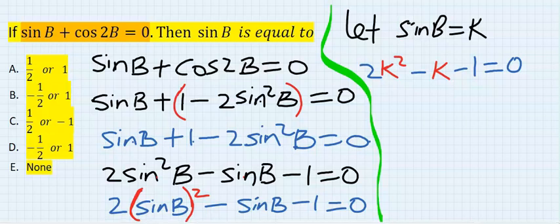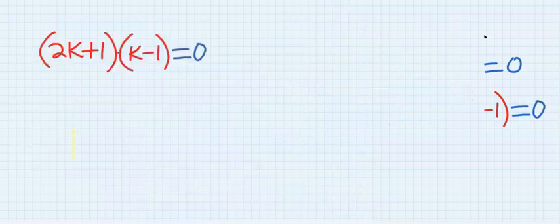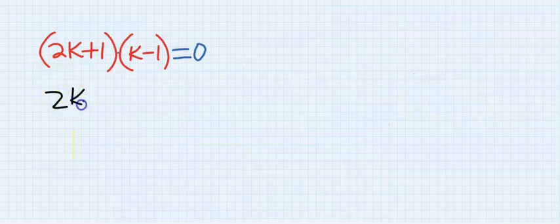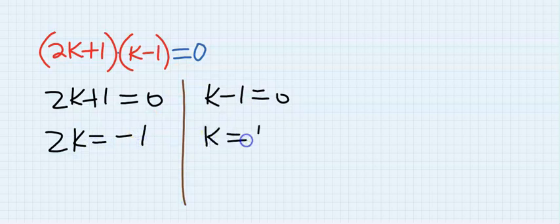This becomes quadratic equation. Visit the quadratic equation video to see how this was achieved. Now solving this further we have 2K plus 1 equals 0 and K minus 1 equals 0.